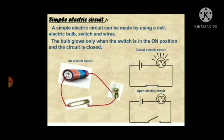Simple electric circuit. A simple electric circuit can be made easily by using a cell, electric bulb, switches, and wires. The bulb glows only when the switch is in the on position and the circuit is closed.